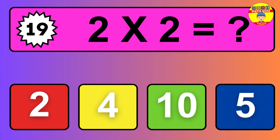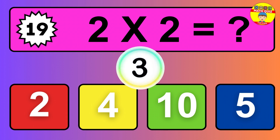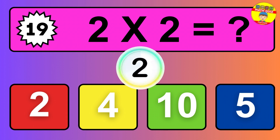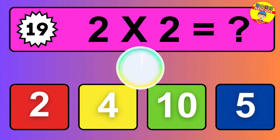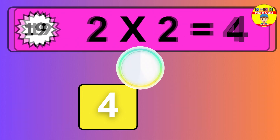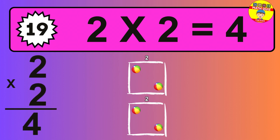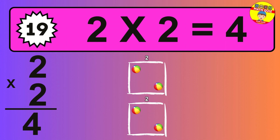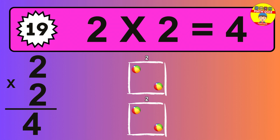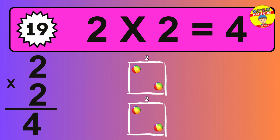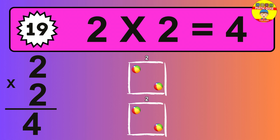Question nineteen. Two times two equals what? So the answer is two times two is 4. To calculate, we have two groups with two balls each one. So how many balls do we have? 4 balls.